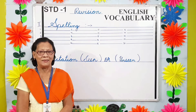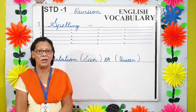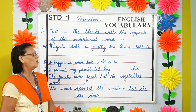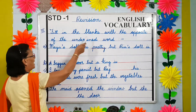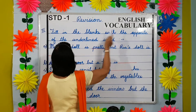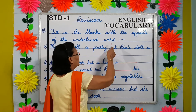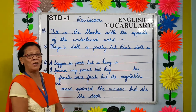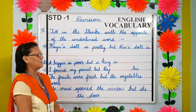To do well in this, you all must do a lot of reading. Moving on to the third question: fill in the blanks with the opposite of the underlined word. Children, I hope you all have learned the opposites from your list.